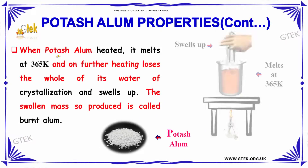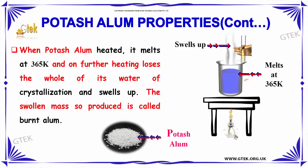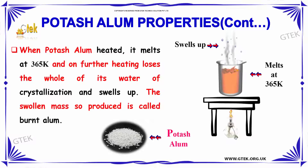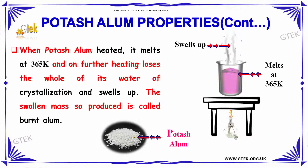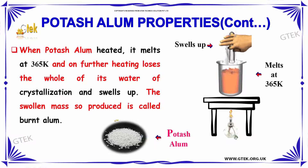When Potash Alum is heated, it melts at 365 degree Kelvin, and further heating loses the whole of its water of crystallization and swells up. The swollen mass so produced is called Burnt Alum.